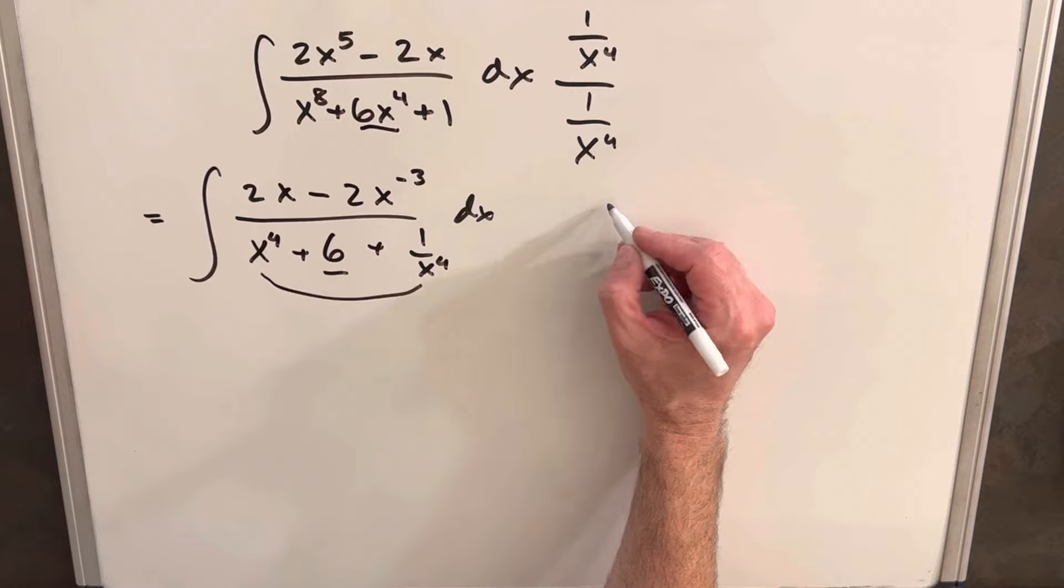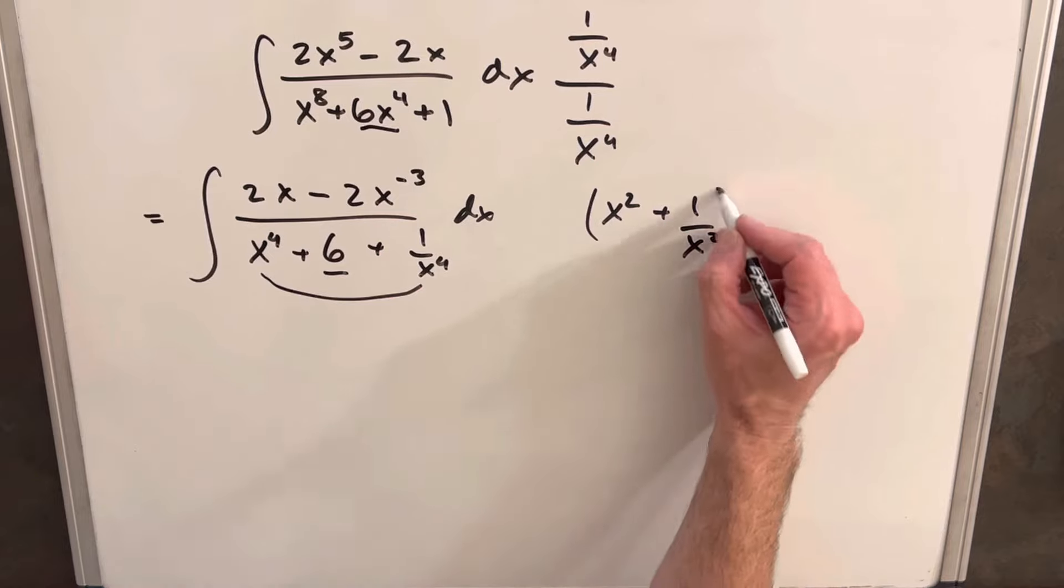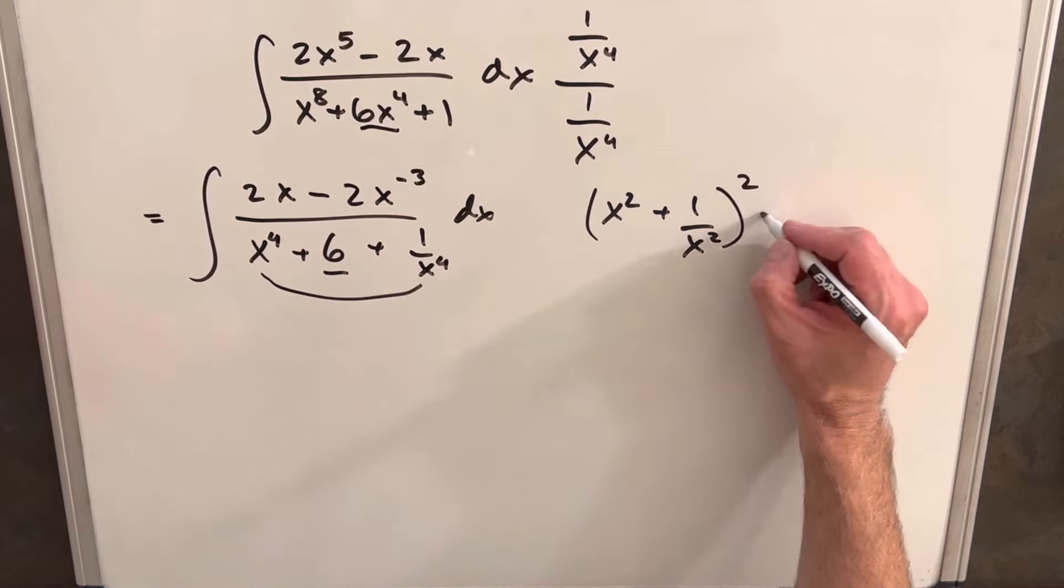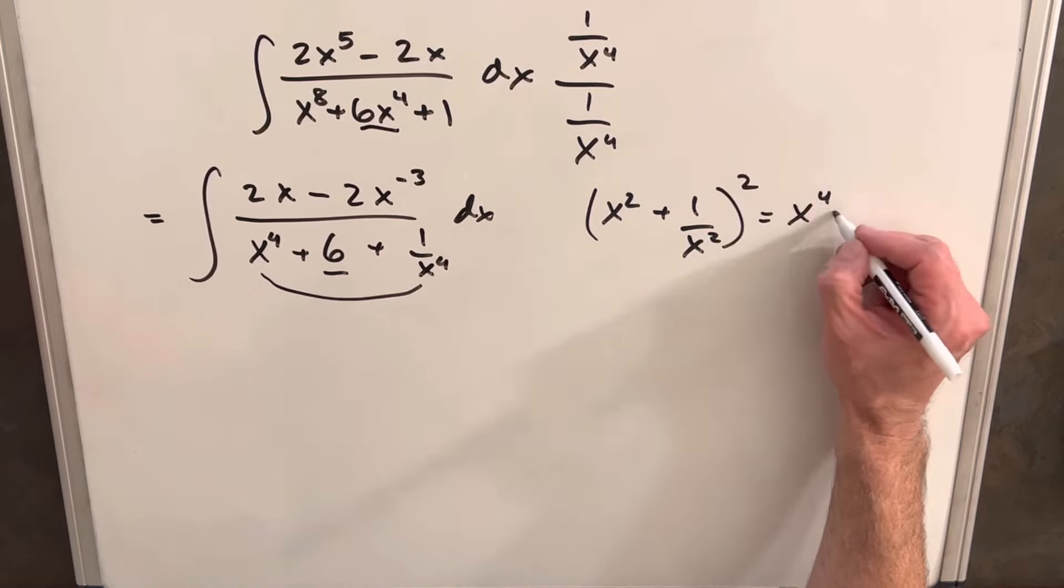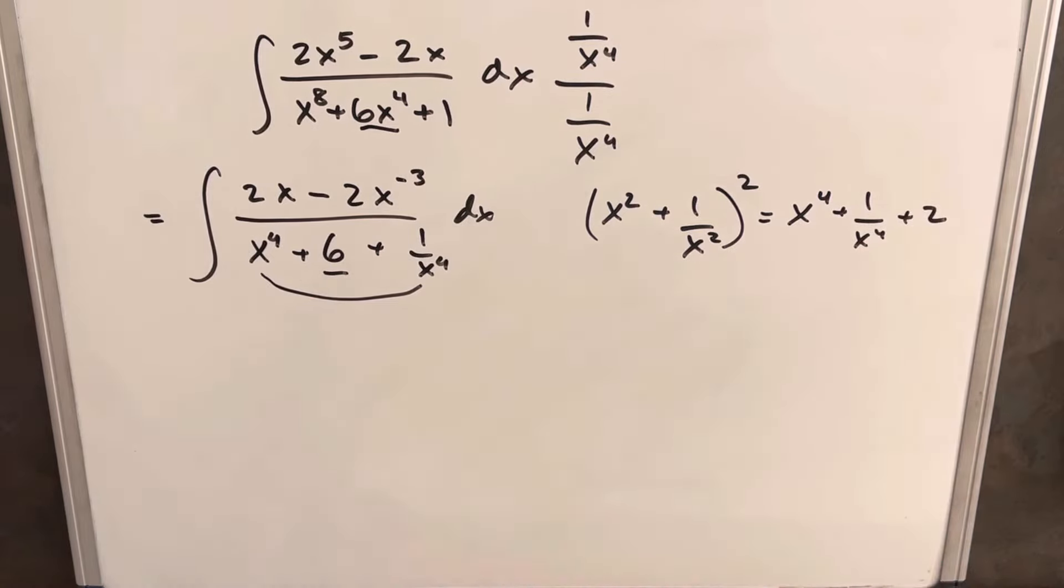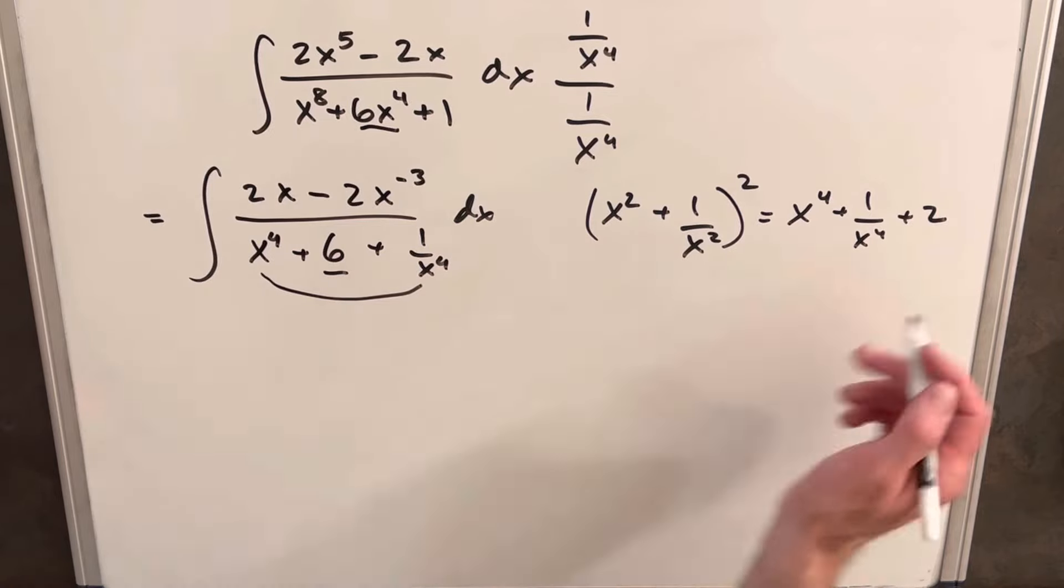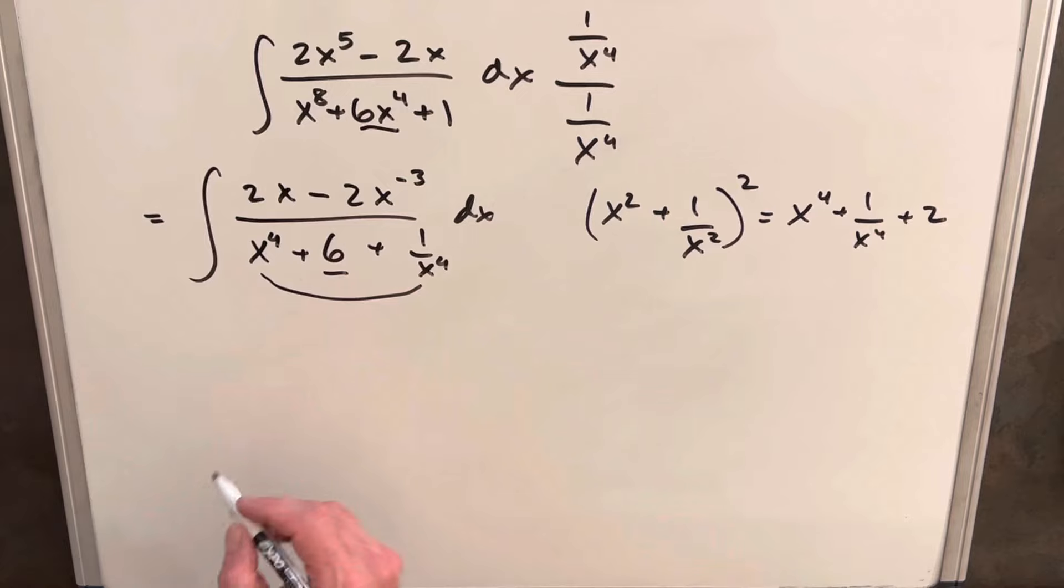And what I want to do is, let's just notice, if we look at just x squared plus 1 over x squared, and we square this thing, we end up with x to the 4th plus 1 over x to the 4th plus 2. So to have this match what we have in the denominator, we just need to add 4 to this. So let's rewrite this whole thing.